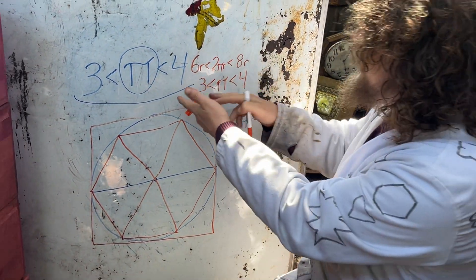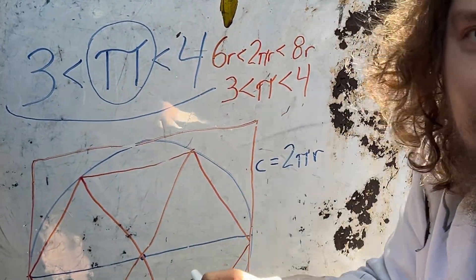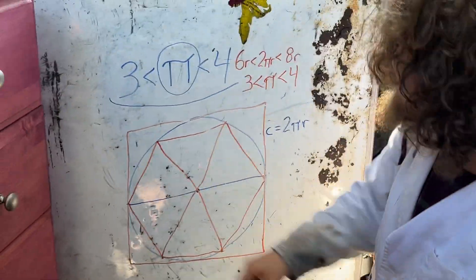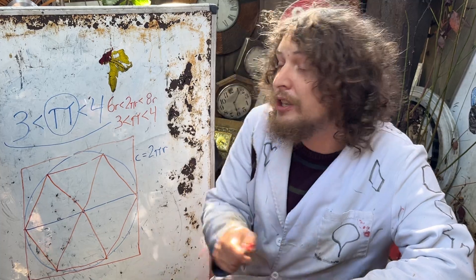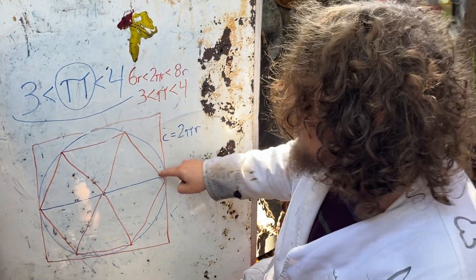And while that is a really poor attempt at bounding pi, because we could have probably even gotten a better guess by using a piece of string, it does show techniques ancient mathematicians would use.